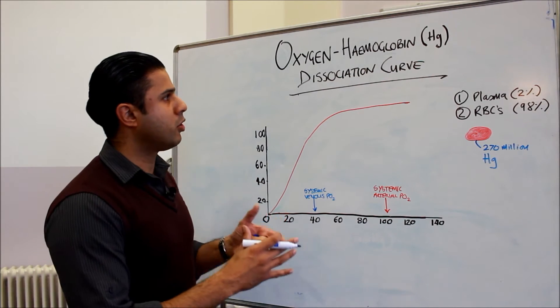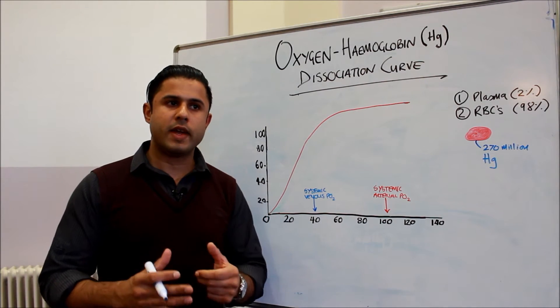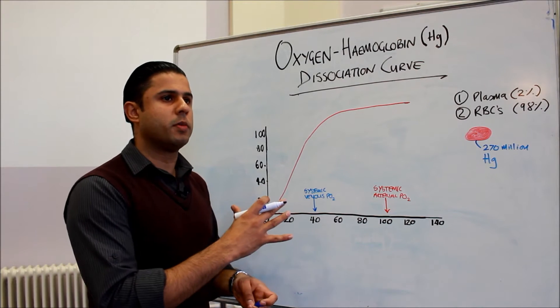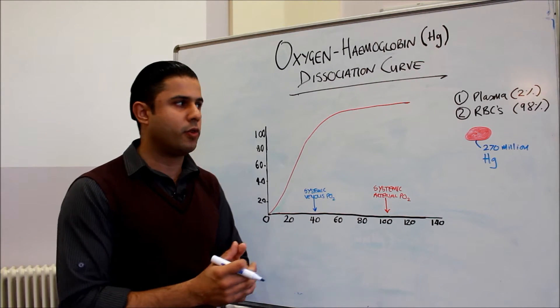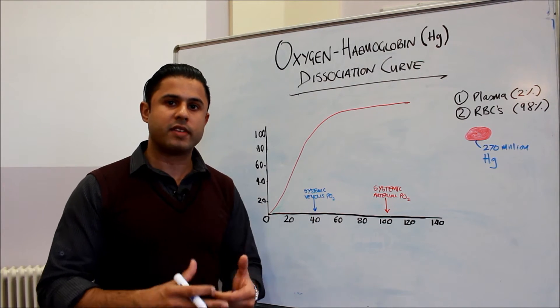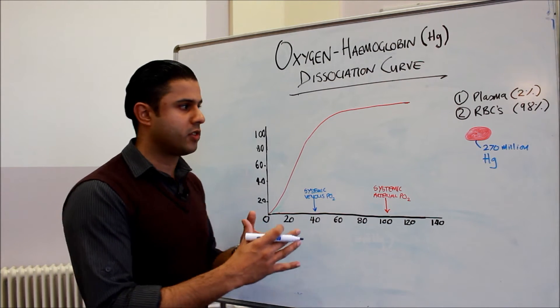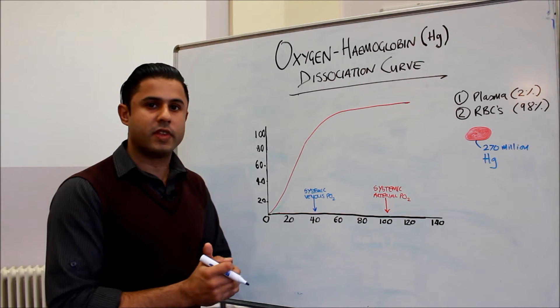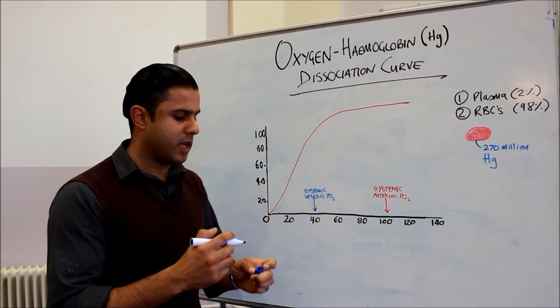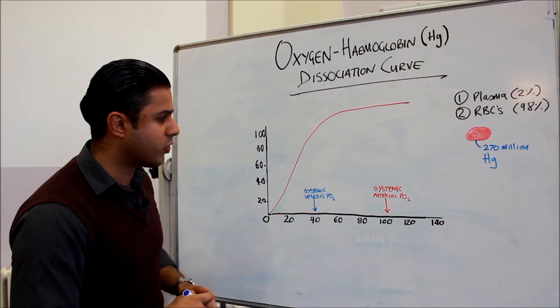Now the oxygen hemoglobin dissociation curve always seems complex when you first come across it. If you've never come across it before it can look a little bit daunting, but it's actually very simple in what it's trying to show—what it's trying to describe in terms of the unloading of oxygen from the hemoglobin. So let's get straight into it.